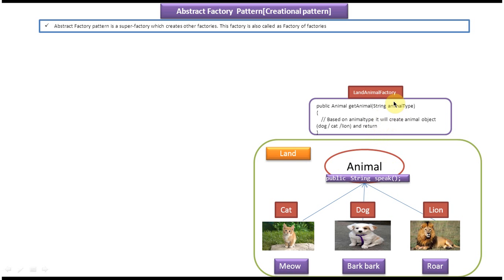Suppose if we pass animal type as lion, this method will create the lion object and assign the lion object to the super interface or super class animal reference variable, and that animal reference variable will be returned to the caller.